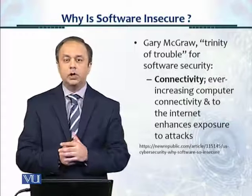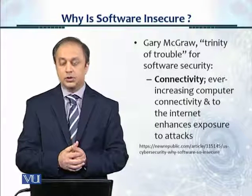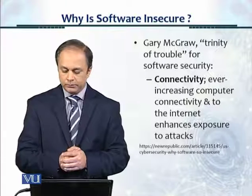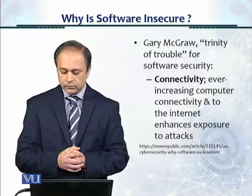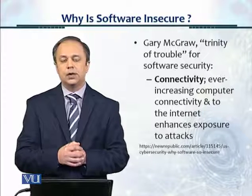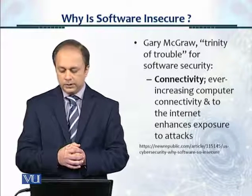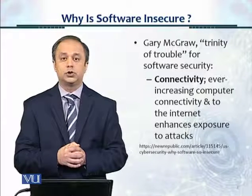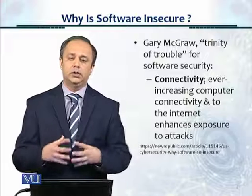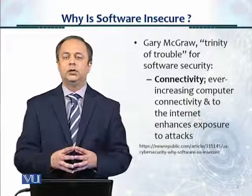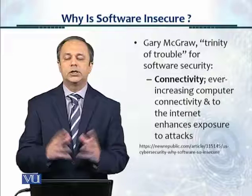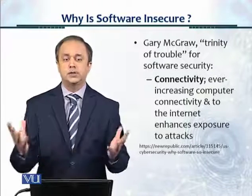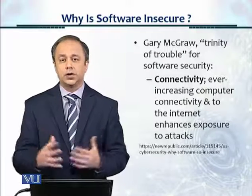Gary McGraw, one of the authors of a software security book, writes about the 'trinity of trouble' — three types of trouble which cause software security challenges. The first is connectivity: ever-increasing computer connectivity to the internet enhances exposure to attacks. The type of applications we have now have wide exposure to the internet, other computers, and other users, and the attack surface area or attack vectors are just tremendous.